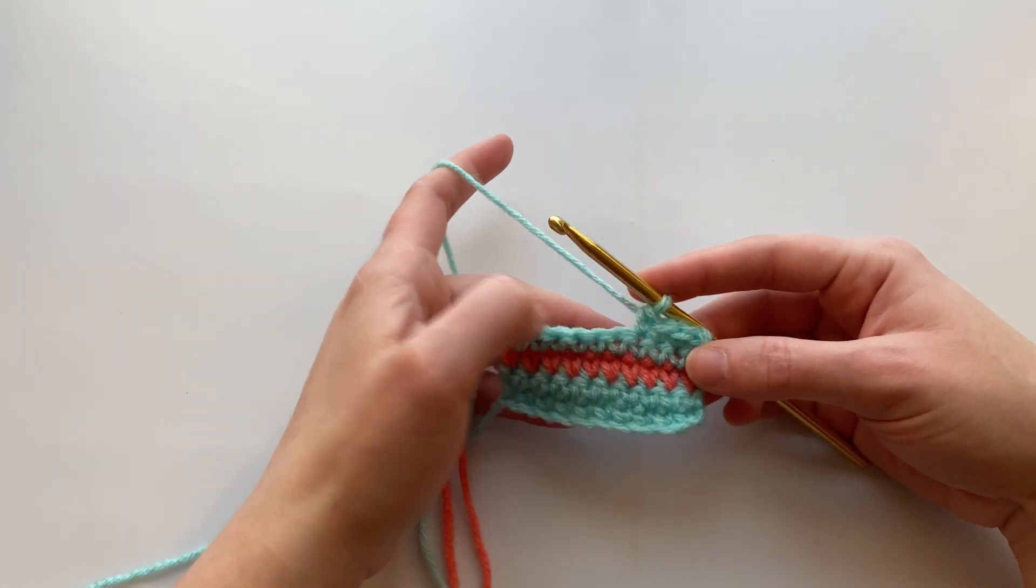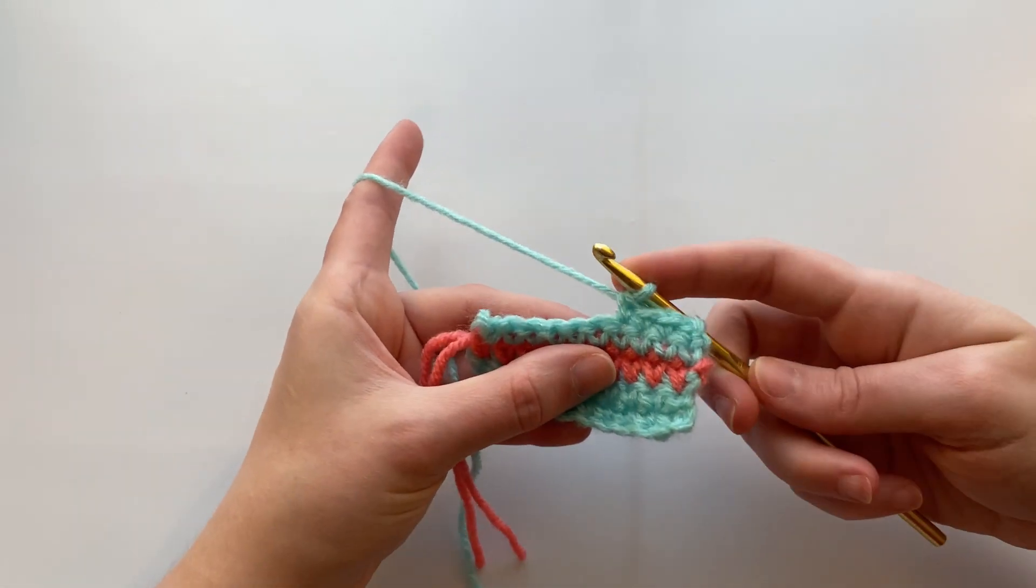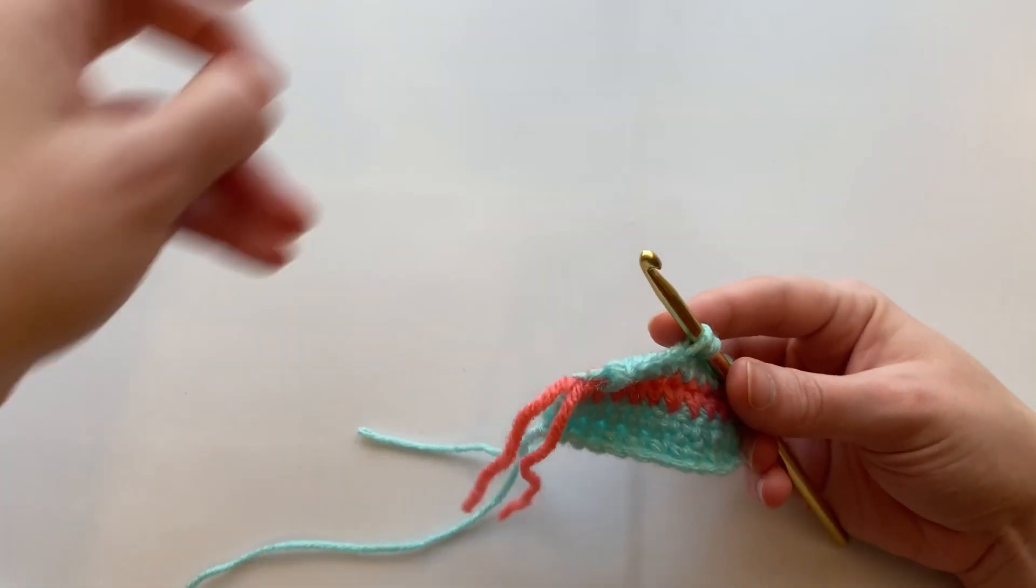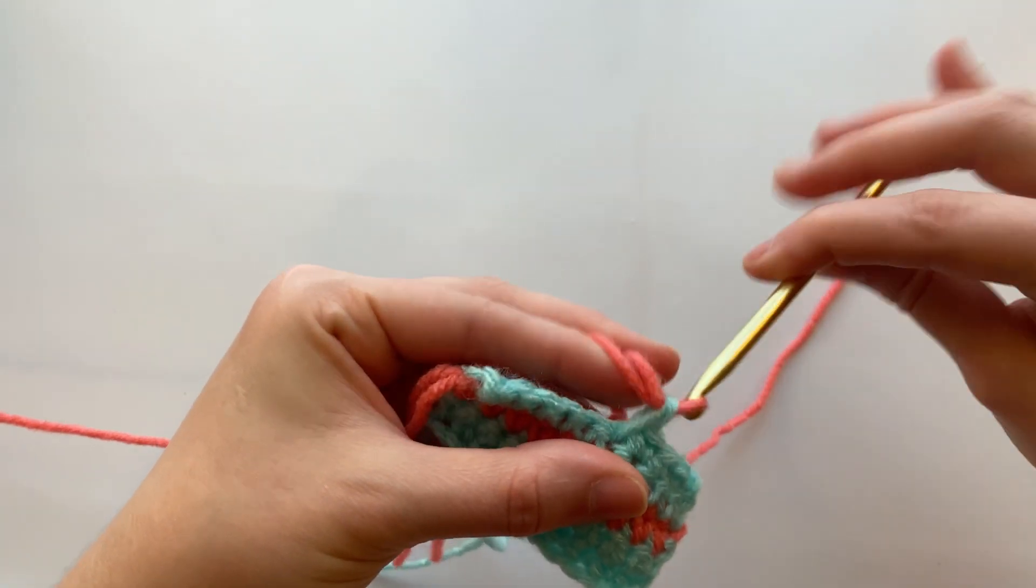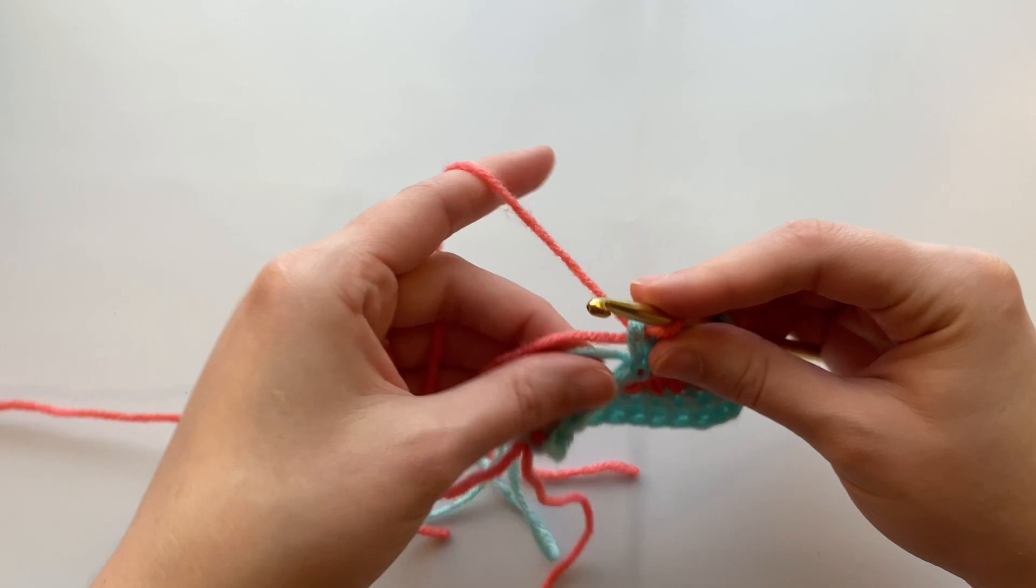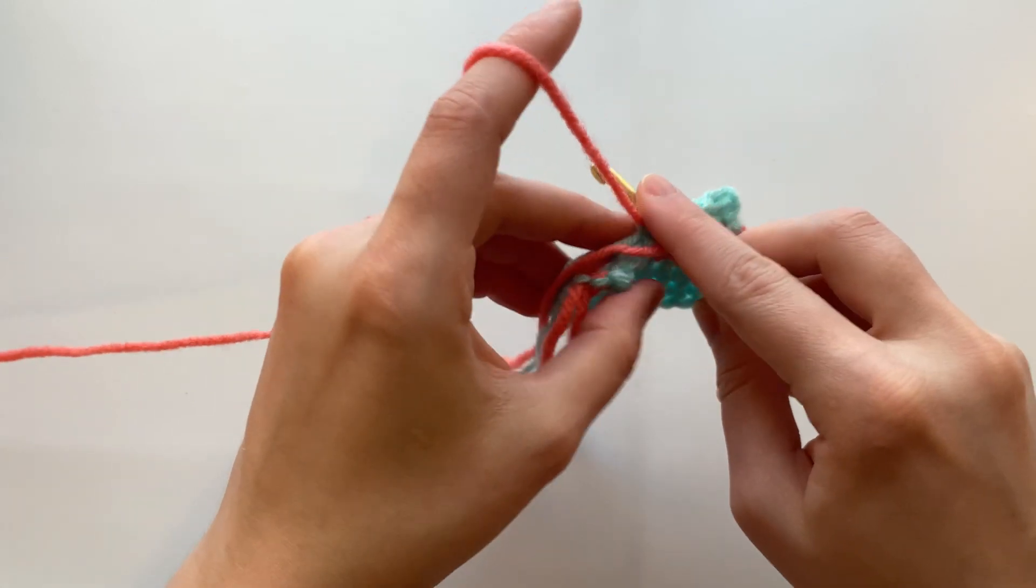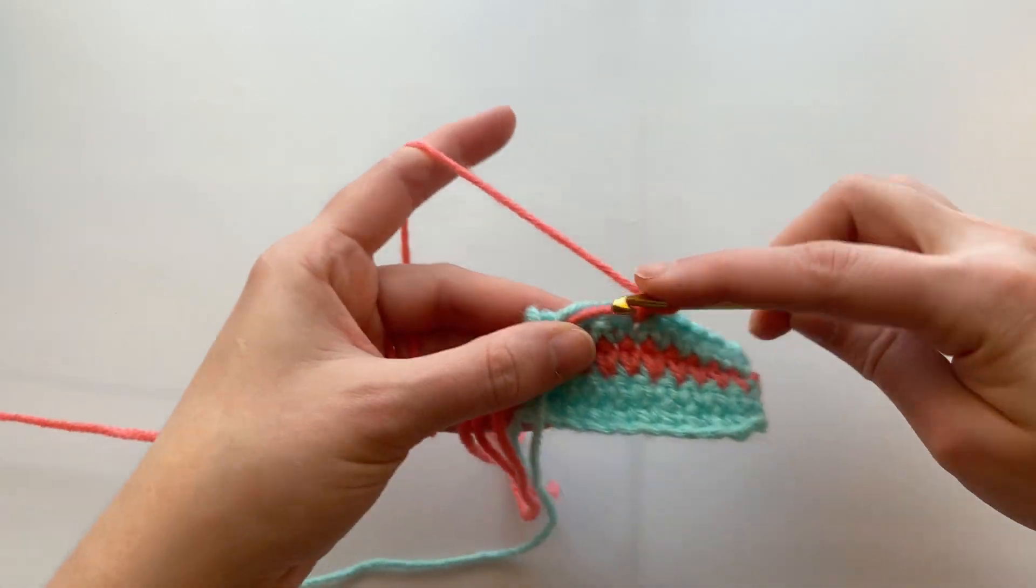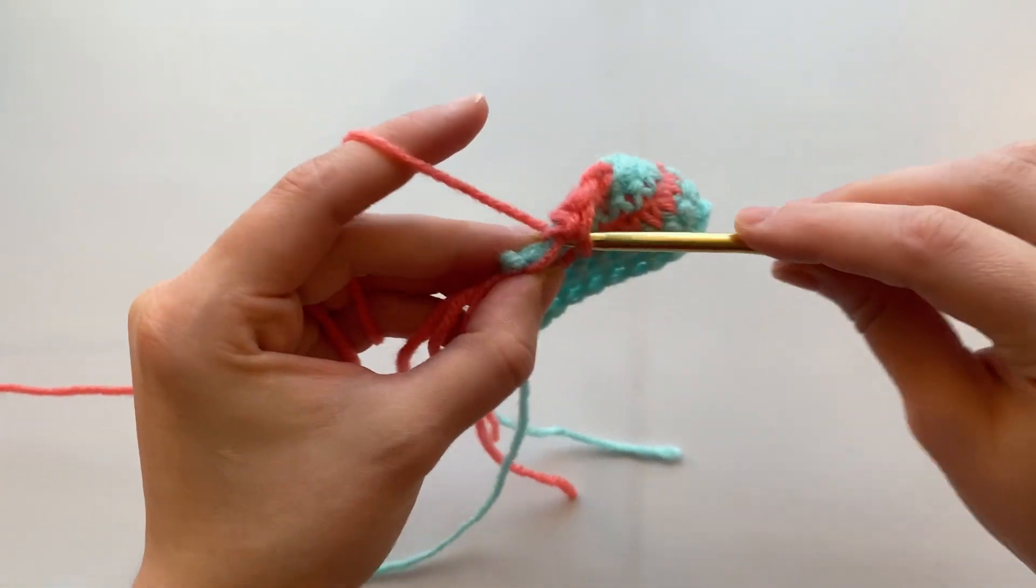So you've decided you want to do a half a row or just the last few stitches or however many in a different color. You're gonna go in what you want to be the last one of the color you're currently working, you're gonna go in like that, and grab the new color. You're gonna pull that through, and I like to pull both of the tails that way I can crochet over them. I just kind of pull them to the front and hold them with my thumb so they're out of the way, and you just crochet as usual right over those end bits.